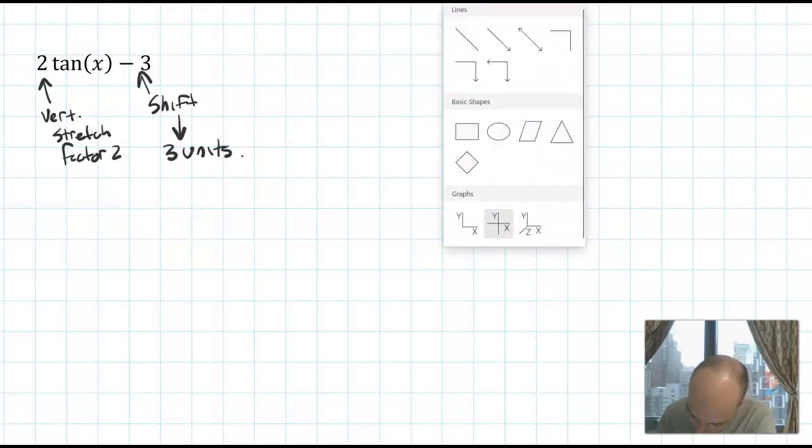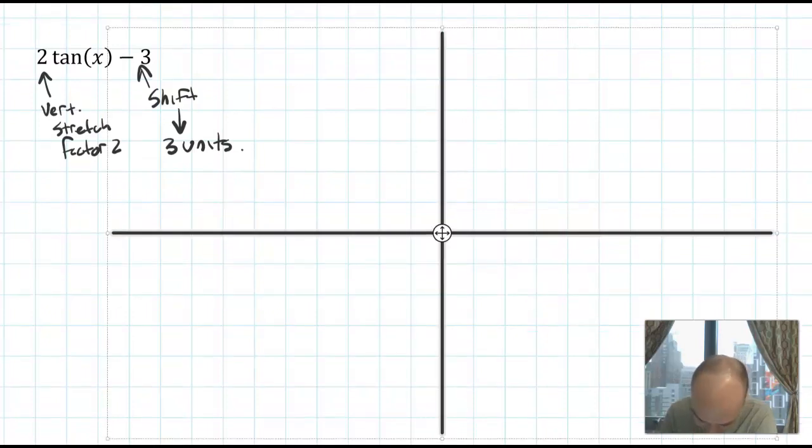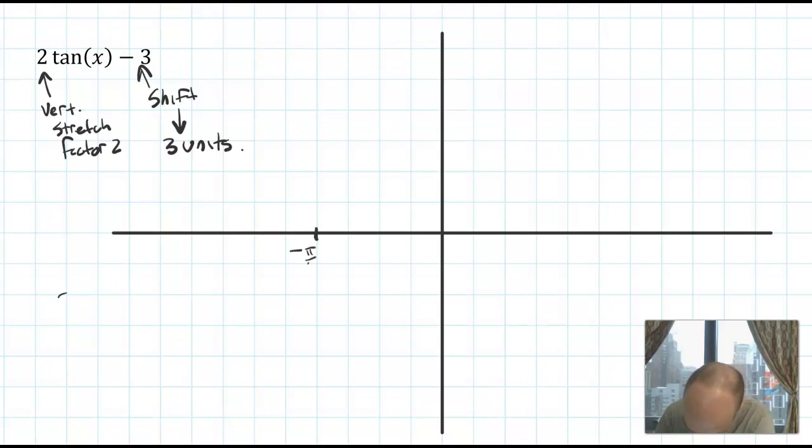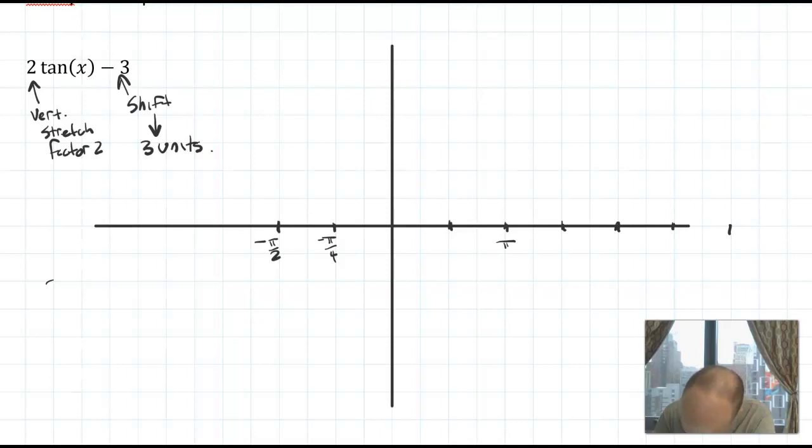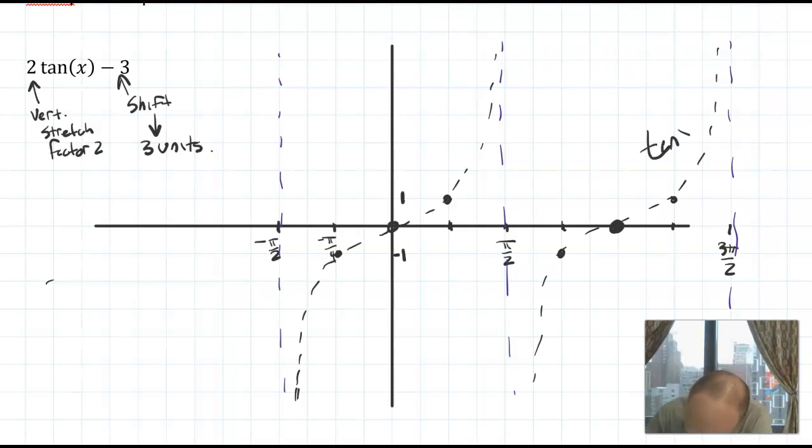So the way I would approach this is by drawing a parent graph and then transforming it. The parent graph is going to have asymptotes at the odd π/2s. It's going to have zeros at zero. I'm going to keep this spacing the same as we drew earlier, so I'm going to put the 1 and minus 1 right here. So the parent graph that I'm drawing in black will look like this.